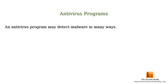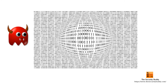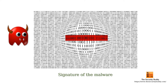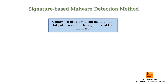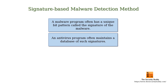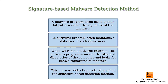The most common method of detecting malware is the signature-based detection method. A malware program often has a unique bit pattern, and this unique bit pattern is called the signature of the malware. An antivirus program maintains a database of such signatures. When we run an antivirus program, it scans all the files and directories of the computer and checks if any of the files contain any known signature of malware.